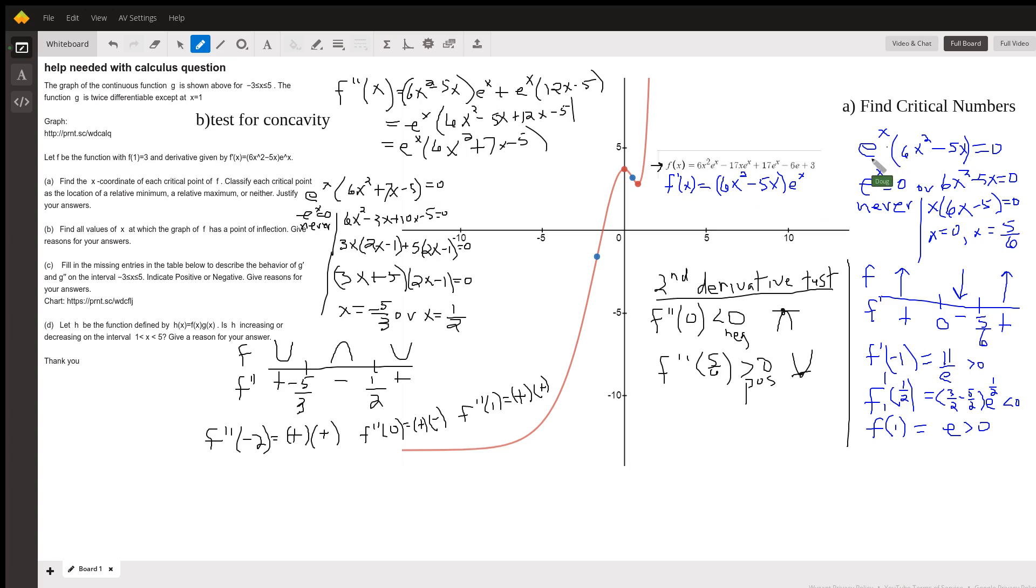Using the zero product property, if the product of two algebraic expressions equals 0, one of them has to equal 0, or the other one has to equal 0. E to the x equals 0? Never. So we don't have a solution from here. But when 6x squared minus 5x equals 0, we solve and find out that x is 0 or x is 5/6.